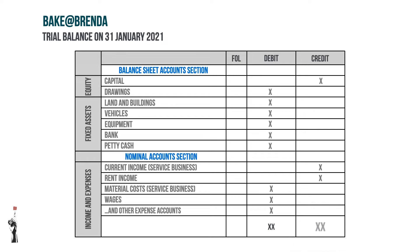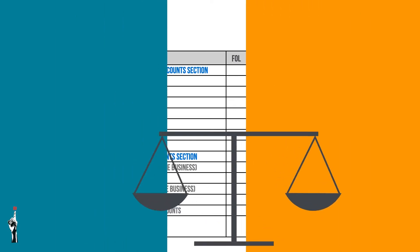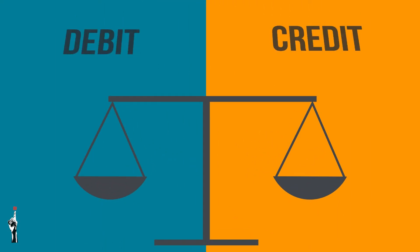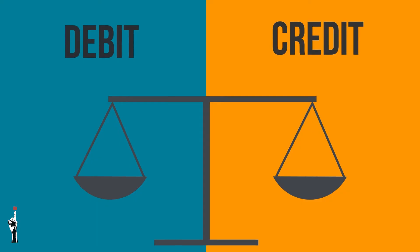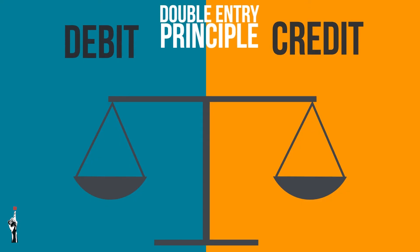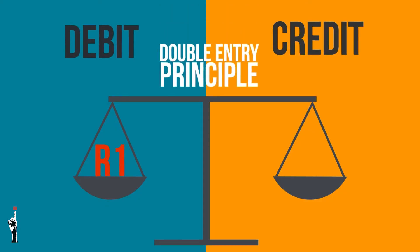The nominal account section consists of income and expense accounts. If the debit side equals the credit side at the end of the trial balance, we know the trial balance balances, which means the totals agree and the double entry principle was applied.